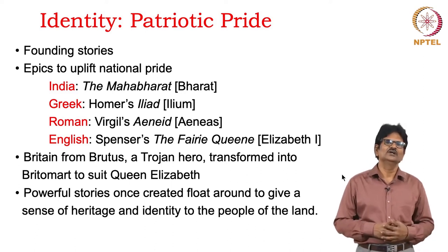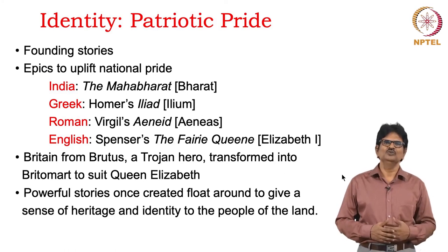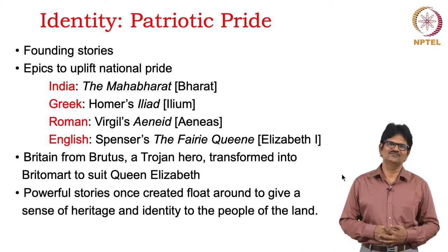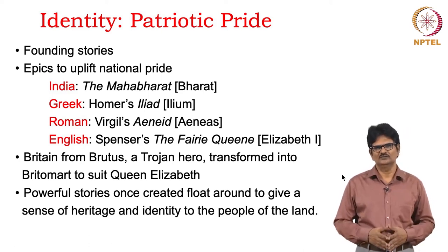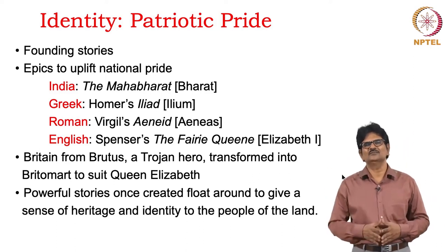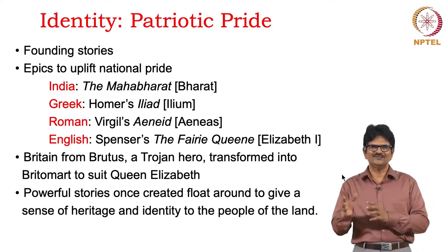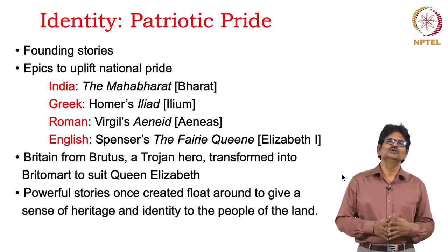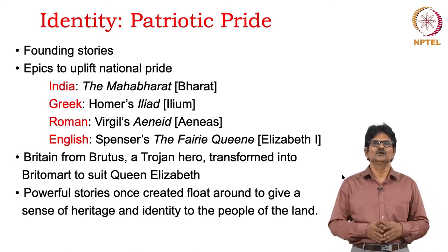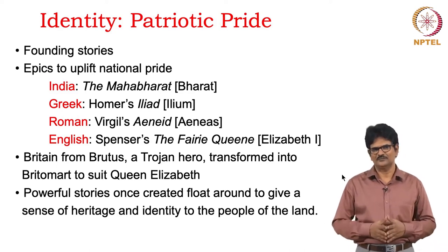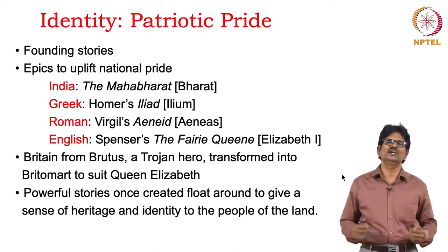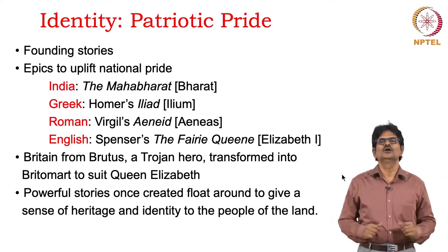In the case of India, we have the Mahabharata, which explains what it means to have a Bharata — that is, India. Similarly, we have Homer's Iliad in Greece, Virgil's Aeneid in Rome, and in English, Edmund Spenser's The Faerie Queene, written in the sixteenth century referring to Queen Elizabeth the First, who is indirectly connected to Britain through Brutus, a Trojan hero transformed into Britomart. These epics are powerful stories that float around to give a sense of heritage and identity.